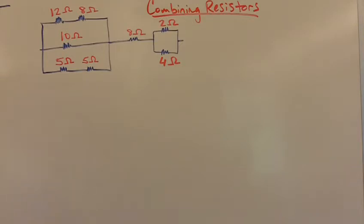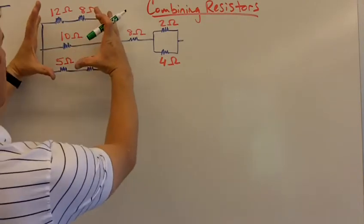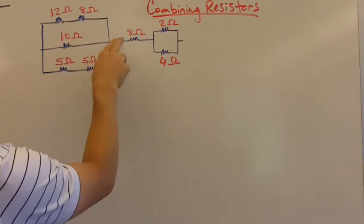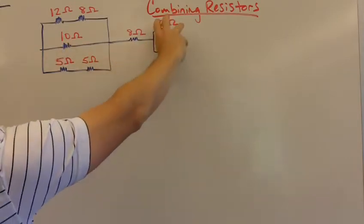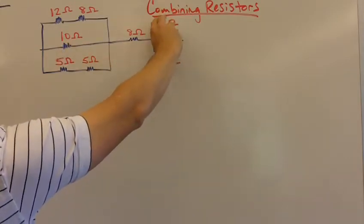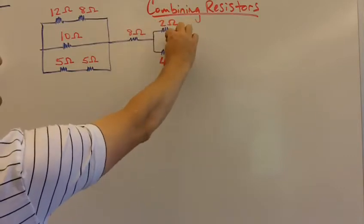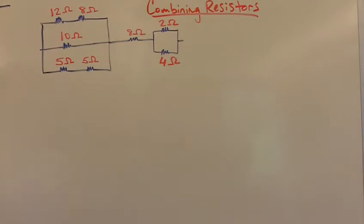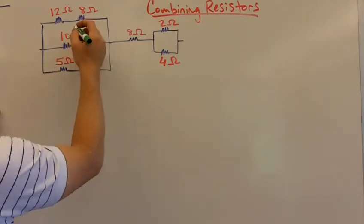We want to do what's in series first. We're going to combine this whole parallel circuit down into one equivalent resistance that we'll then add to 8Ω. Then we need to combine these two down into one and add that as well.